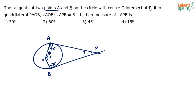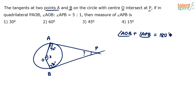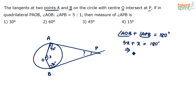The sum of all angles in a quadrilateral is 360 degrees. Out of these, 90 and 90 — that's 180 degrees — are already accounted for by the two right angles. So the remaining 180 degrees is split between angle AOB and angle APB, which are in the ratio 5 to 1. That gives us 5x plus x equals 180.